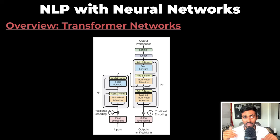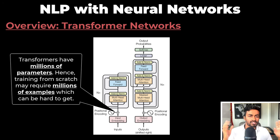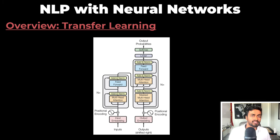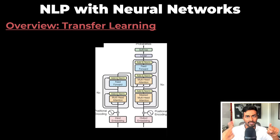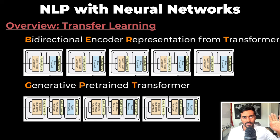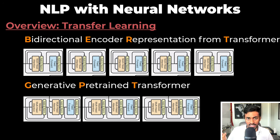This is great, but we have a problem here. Transformers have millions of parameters, and hence training transformers from scratch can require millions of training examples, which can be pretty hard to get. So to deal with this, we can use transfer learning. The encoder and the decoder of the transformer can be picked apart — we can stack the encoder layers to get BERT, and we can stack the decoder layers to get GPT. Now BERT and GPT learn via transfer learning.